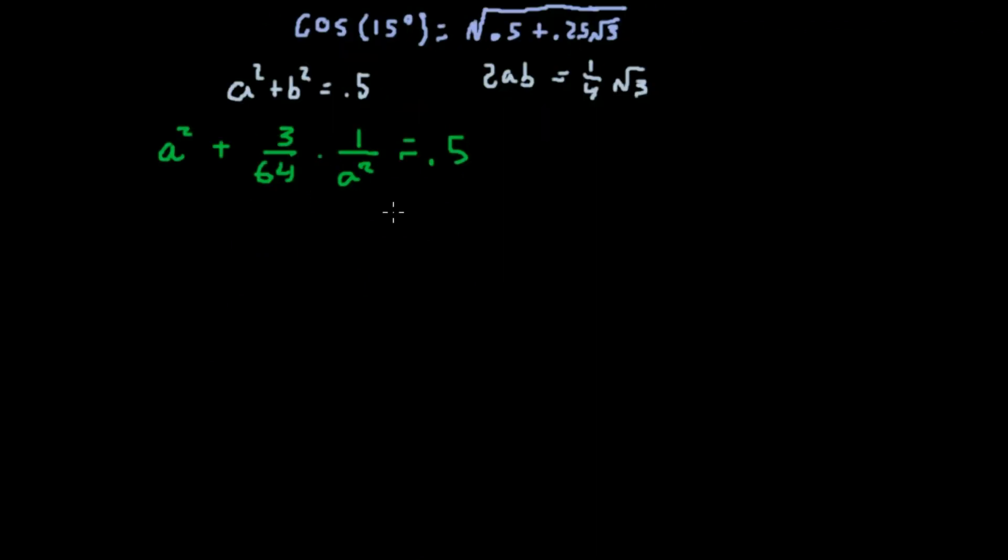Once we've replaced all of the b's with a's, then we can set a squared equal to x, because we have a lot of a squareds in here. So now we have it in terms of one variable. We can do some simple algebra and simplify that to x squared minus 1/2 x plus 3/64 equals 0.